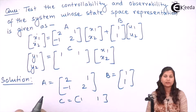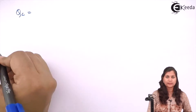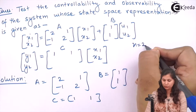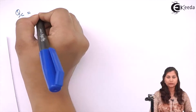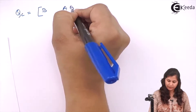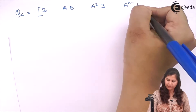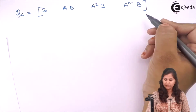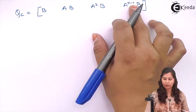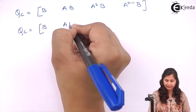Now to check the controllability, we have the controllability matrix QC. Here the number of state variables is 2. So we will find out the controllability matrix as [B, AB, A²B, ..., A^(n-1)B]. Since n is 2, it will be n minus 1 = 1, so we are going to calculate QC using B and AB.